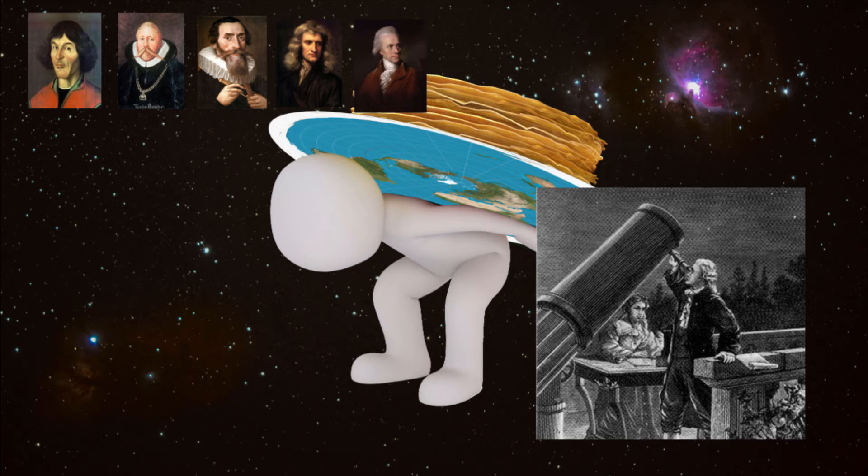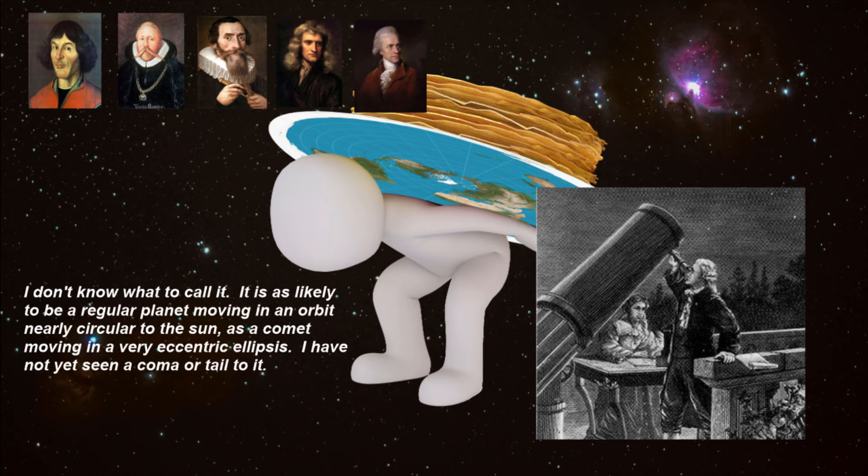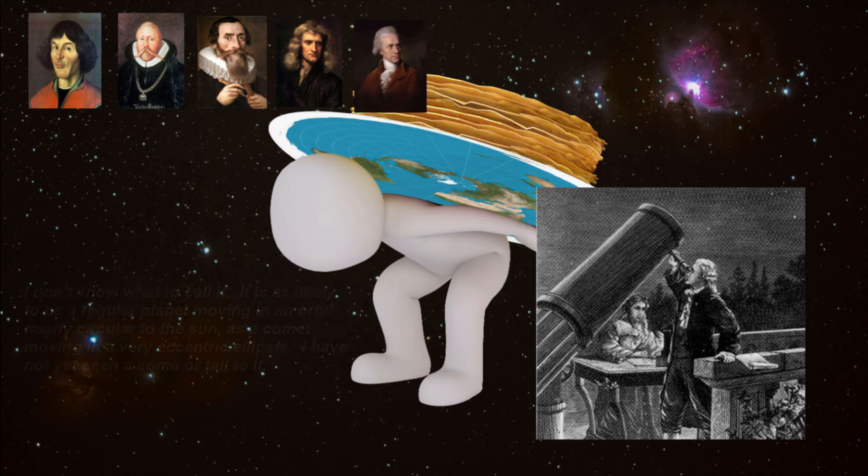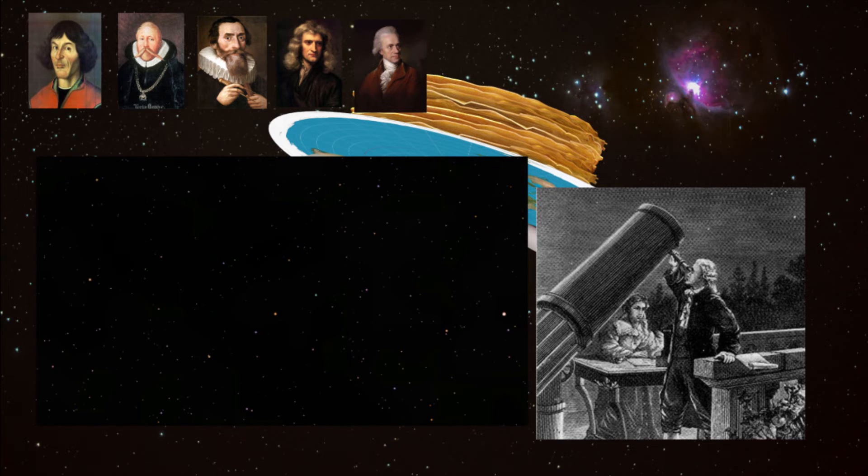Knowing this, Herschel focused his survey on this narrow swath of the sky. On the 13th of March 1781, Herschel found what he believed to be a new comet, stating: 'I don't know what to call it. It is as likely to be a regular planet moving in an orbit nearly circular to the sun as a comet moving in a very eccentric ellipsis. I have not yet seen a coma or tail to it.' Follow-on observations by other astronomers determined this was not a comet but rather a newly discovered planet: Uranus.